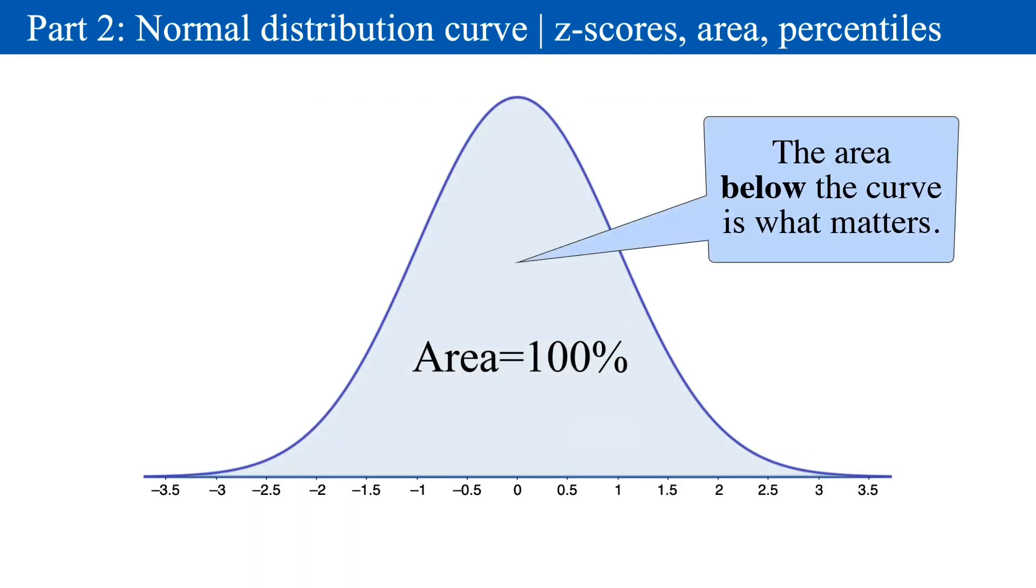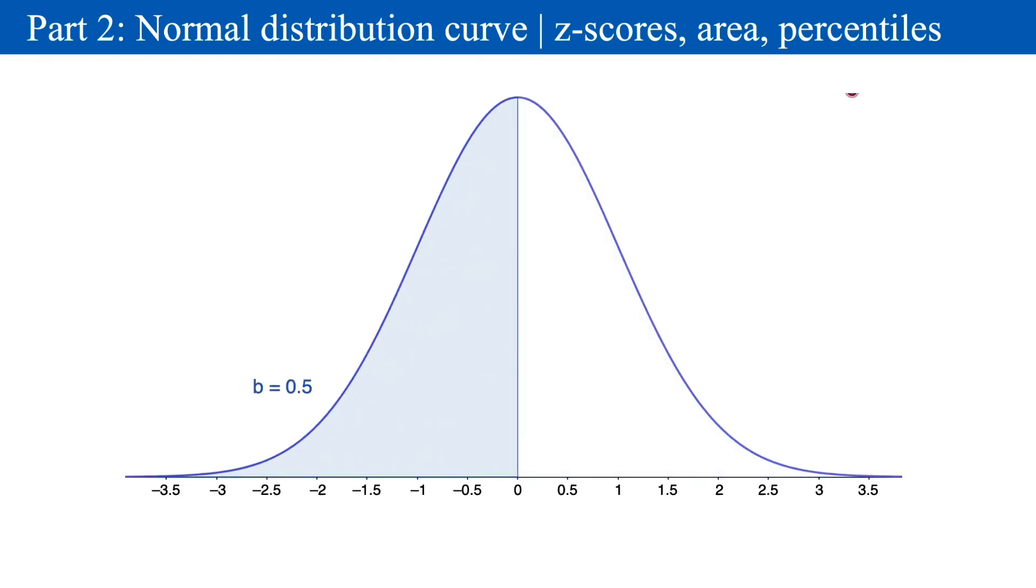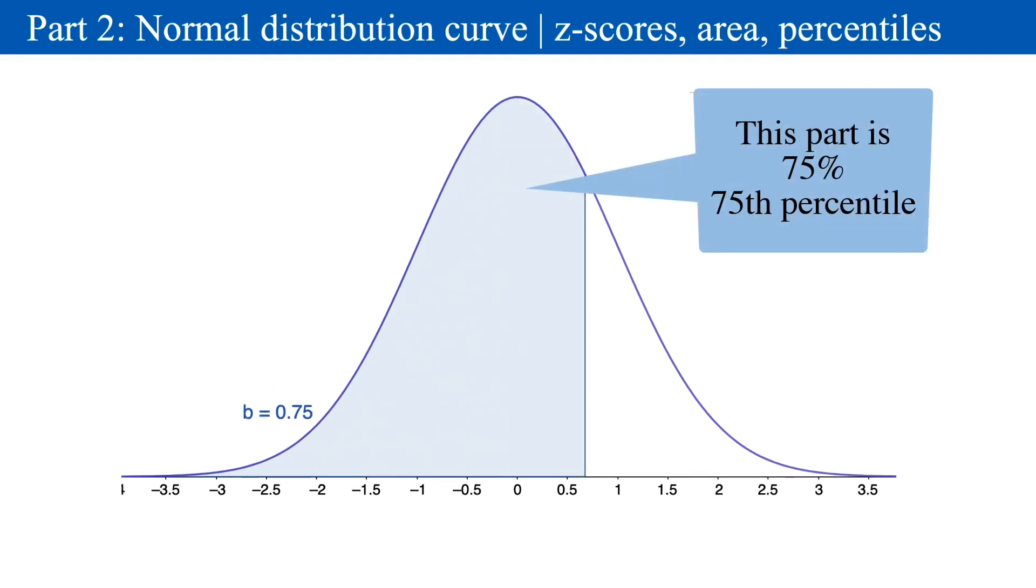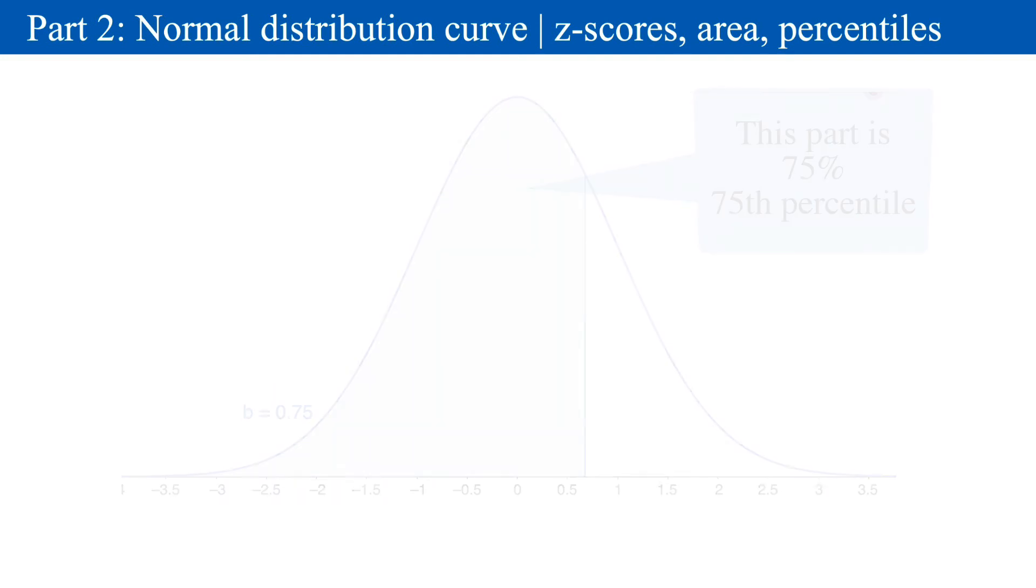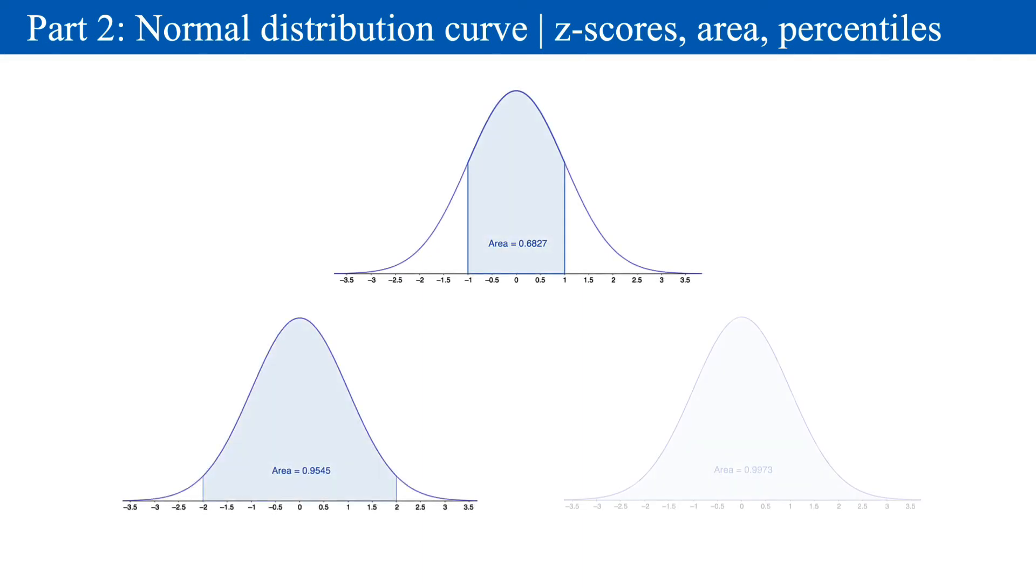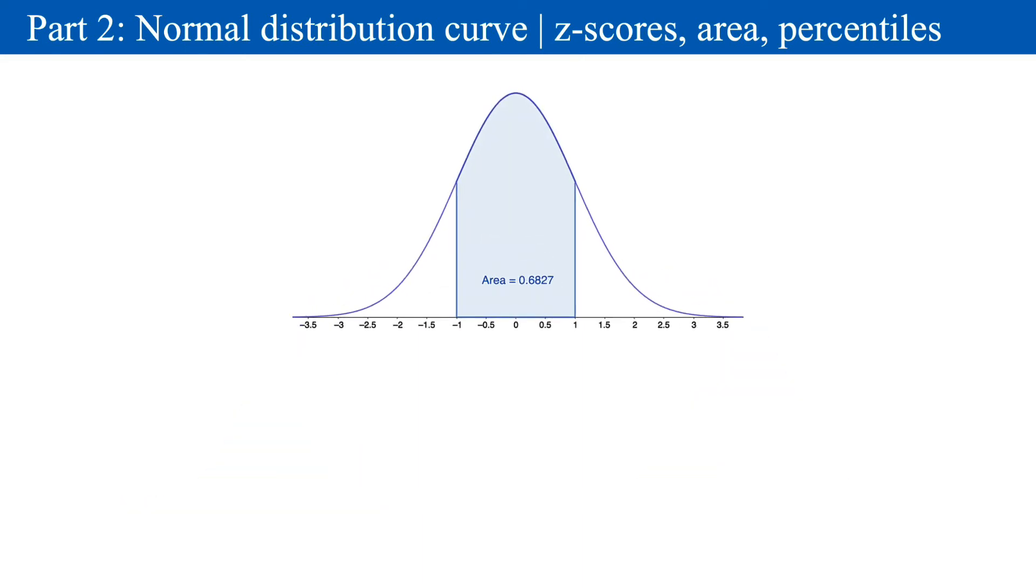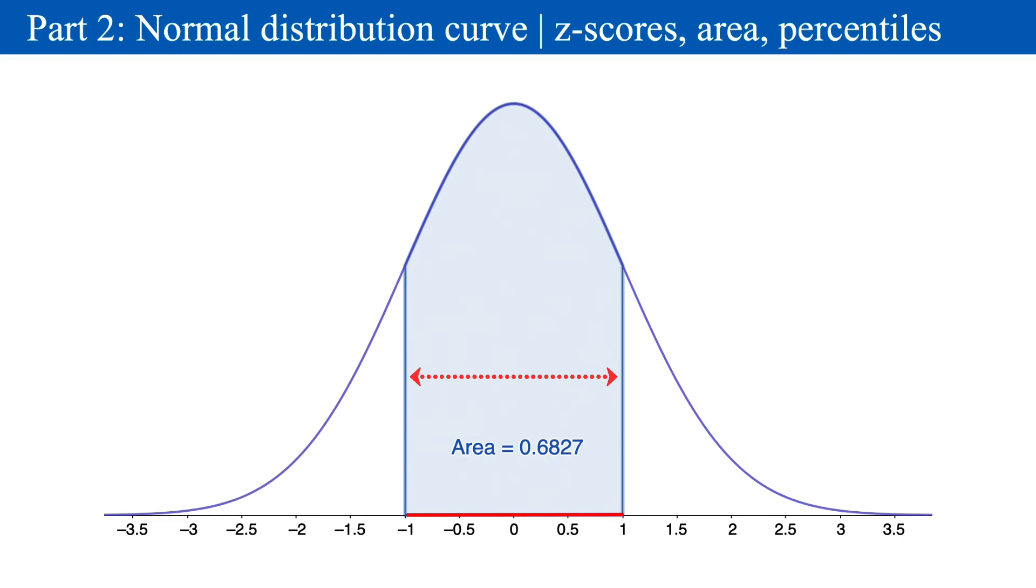What we really care about most is the area under the line. The entire area is 1, or 100%. So this half is 50%, and 75% looks like this. You'll want to know some key points of interest. From negative 1 to positive 1, the area is 0.68. From negative 2 to positive 2, it's 0.95. And from negative 3 to positive 3, the area is 0.997.